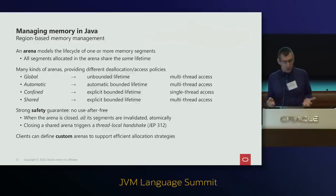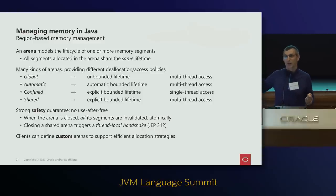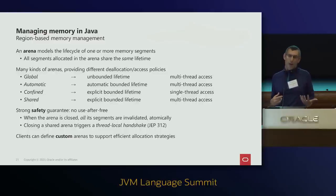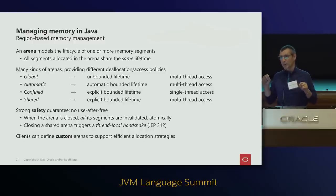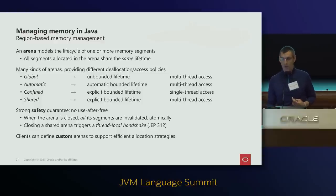Explicit Arenas come in two flavors: a confined Arena with single-threaded access, and a shared Arena accessible from multiple threads. No matter which Arena you choose, you always get strong temporal guarantees — it is never possible to access a memory segment after its memory has gone away, even if a shared segment is being closed concurrently by another thread. When you close a shared Arena, a thread-local handshake is initiated to ensure no platform thread is accessing any associated memory segment. Clients can also define custom Arenas for custom allocators.